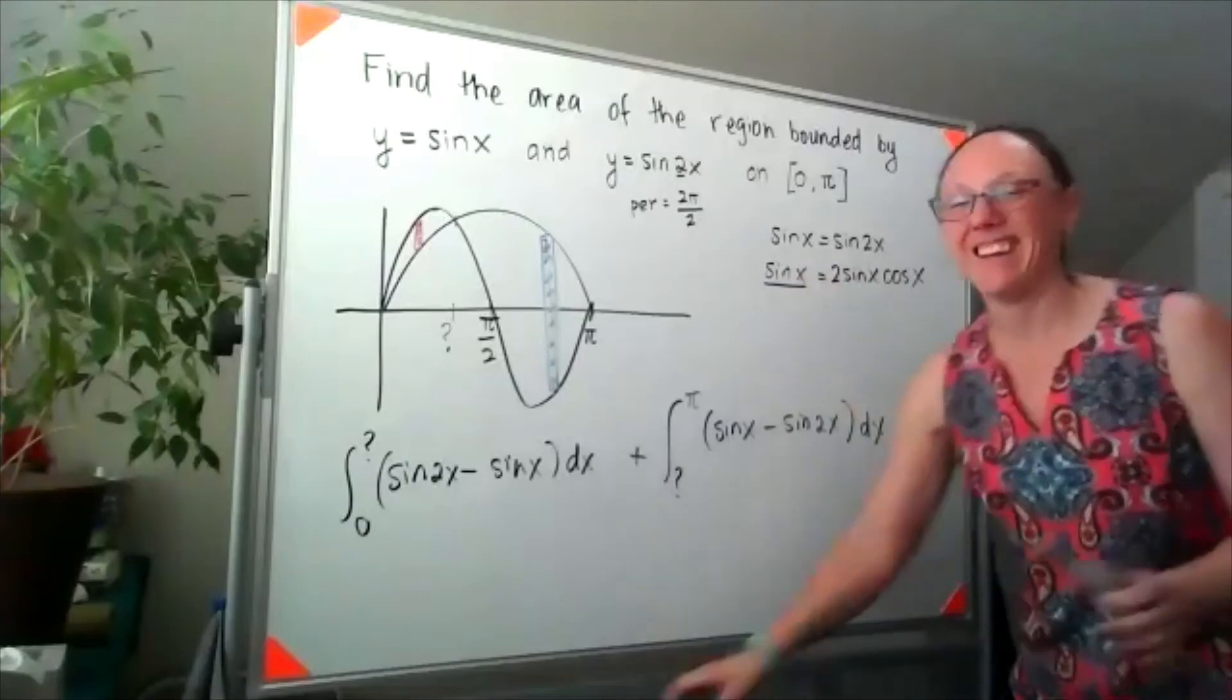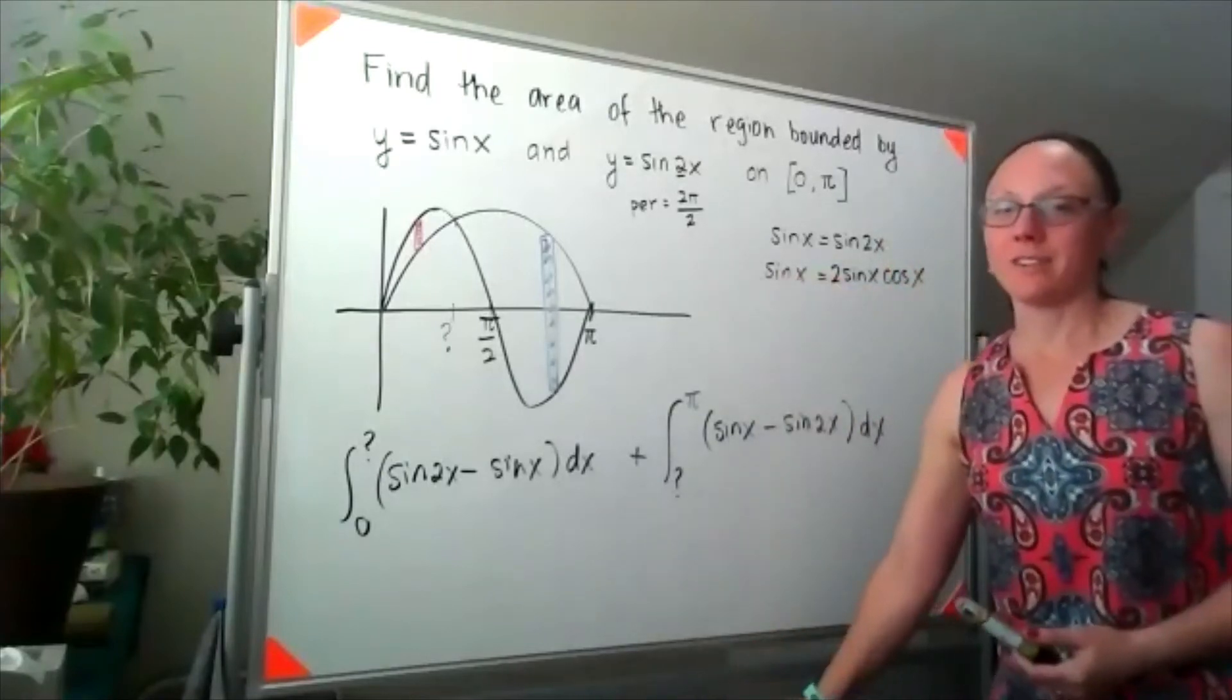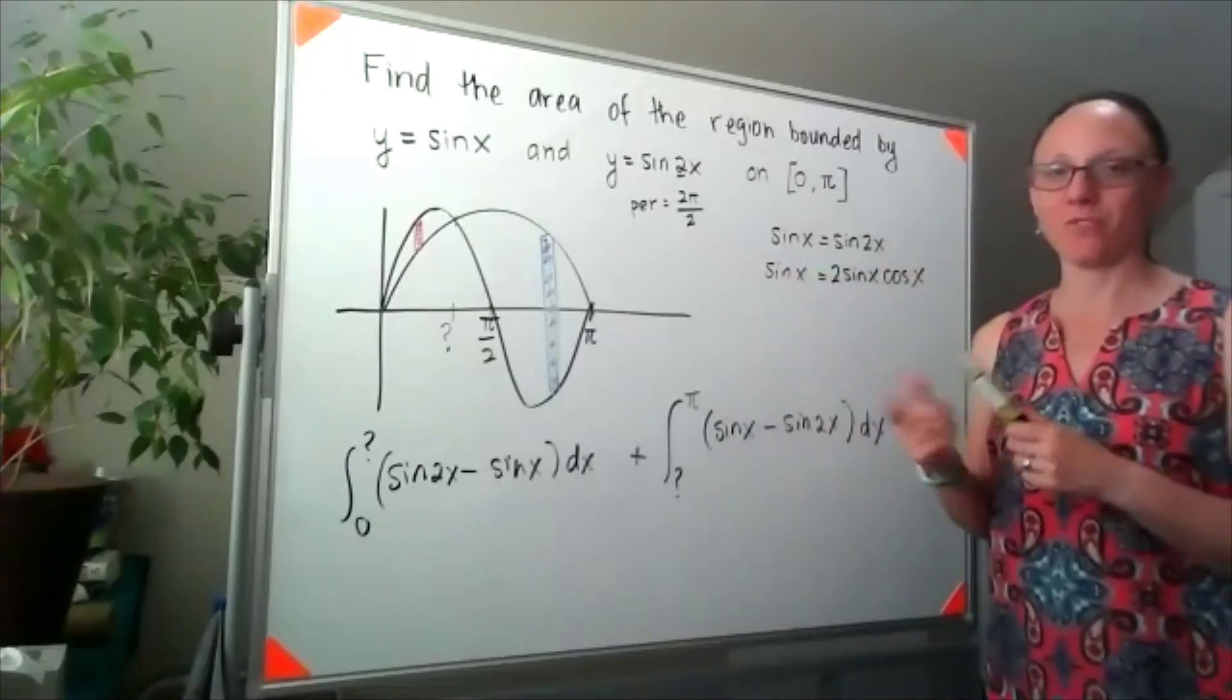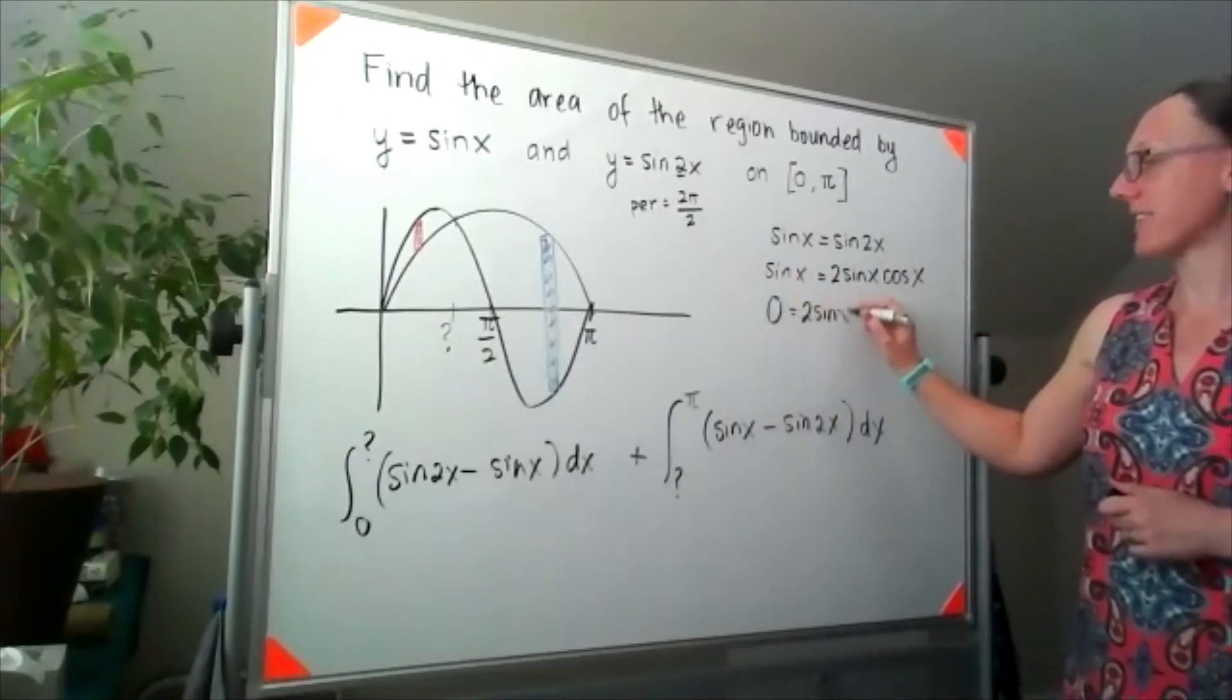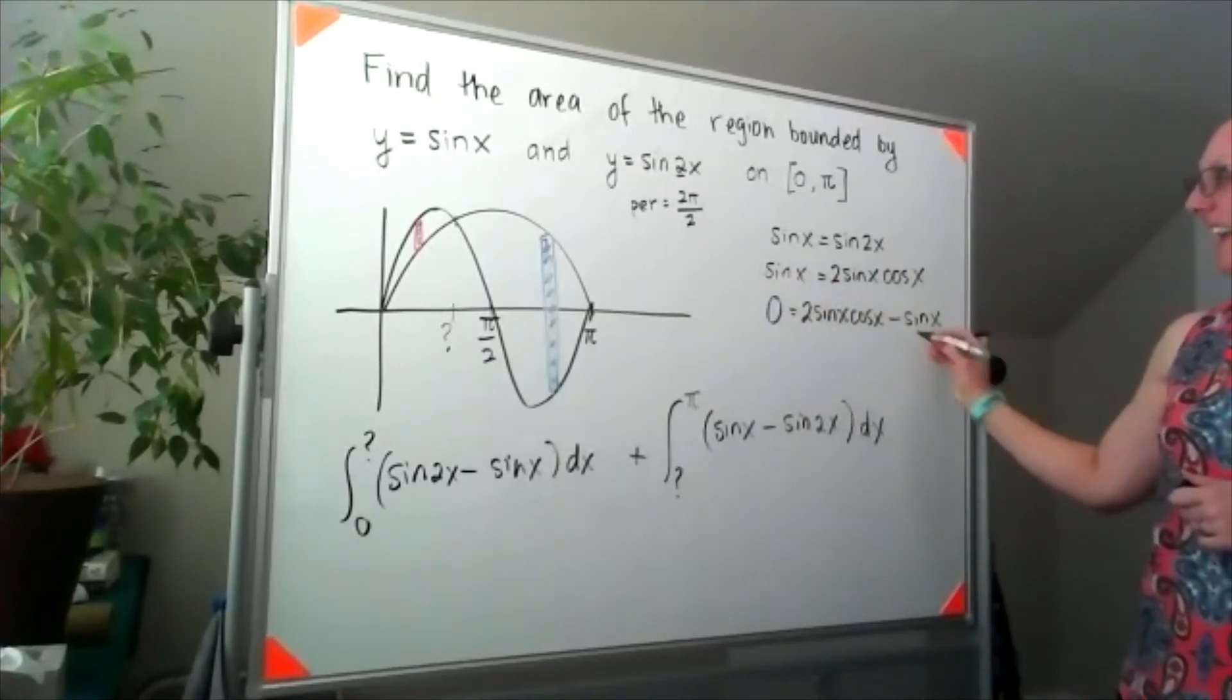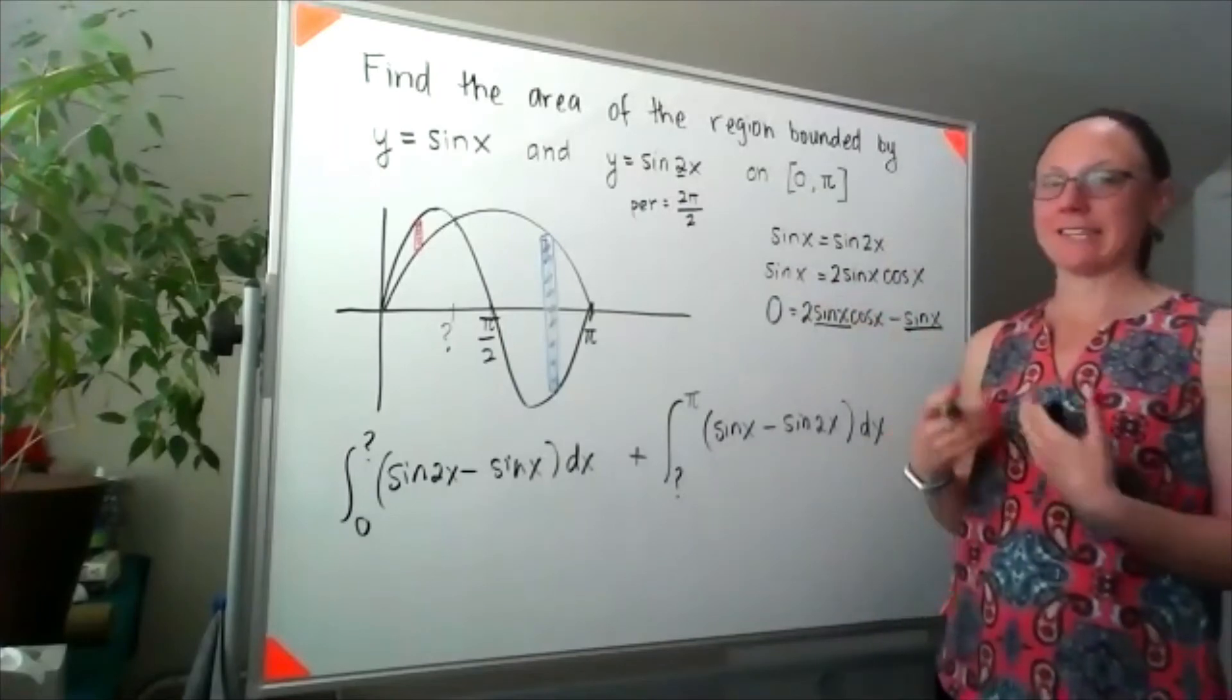Alternately, the better way to do this is to actually subtract the sine x over, so that's what I'm going to do. If I subtract that sine x over, then I would be left with 0 equals 2 sine x cosine x minus sine of x, and now I can factor that sine of x out. Algebraically, that's the better way to do this.